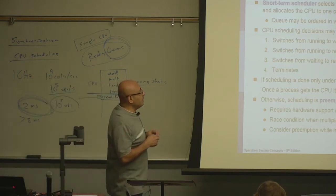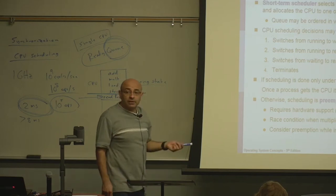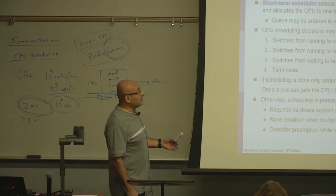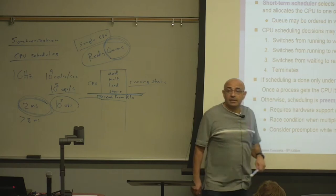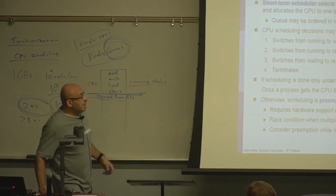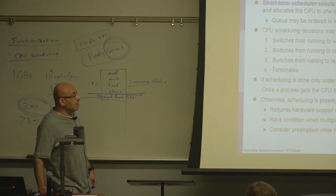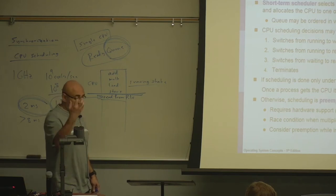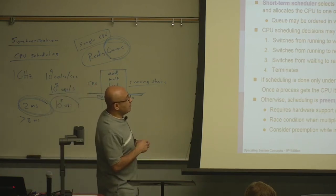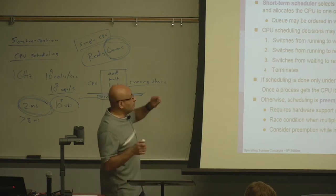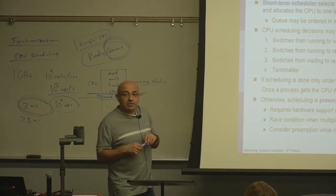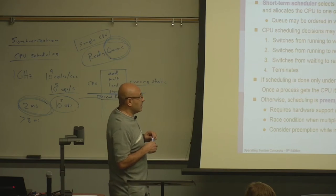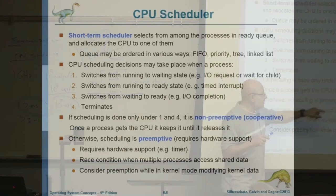Scheduling decisions are made when a process switches from running to waiting by requesting IO, or when a process switches from running to ready. The system preempts the process via a timer interrupt, taking the CPU away and giving it to another process. When this happens — a process getting interrupted with a timer interrupt — we call this preemptive scheduling, which is our focus.